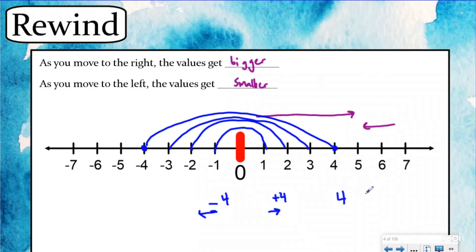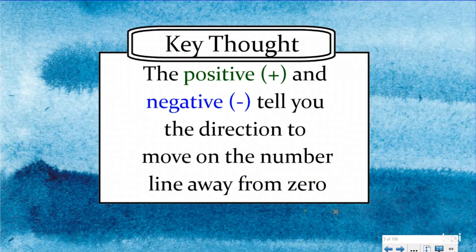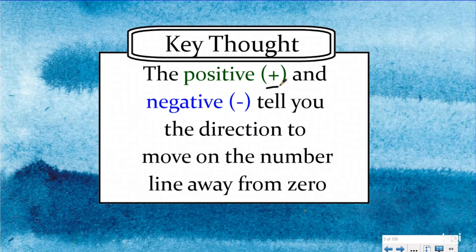This leads us to our key thought today: the positive and negative sign tell you the direction to move on the number line away from zero. When visualizing where to start, you always start at zero. If there's a negative sign it tells you to move that many units to the left. If there's no sign you can infer it's positive and move that many units to the right. Positive means move right; negative means move left.